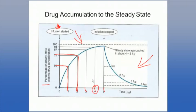At steady state, if we stop the drug, elimination is the reverse of the attainment process. In one half-life, 50% of the drug is eliminated. In two half-lives, a further 25%. In three half-lives, a further 12.5%. In four half-lives, a further 6.25% — so upwards of 90% of the drug has been eliminated after four half-lives.